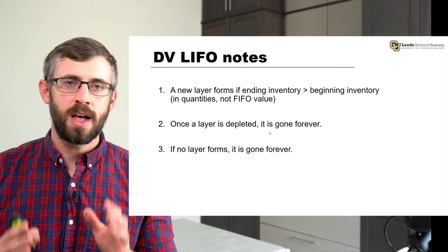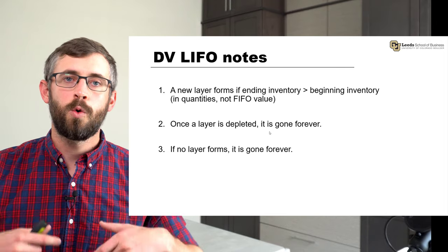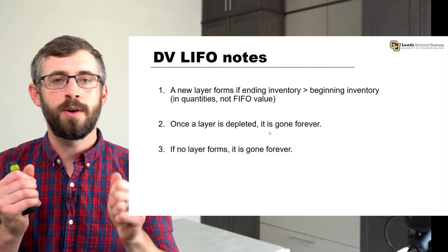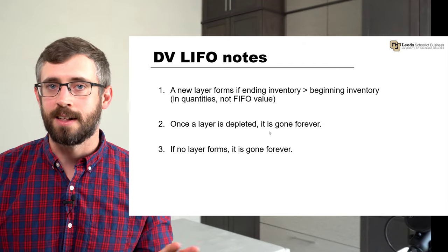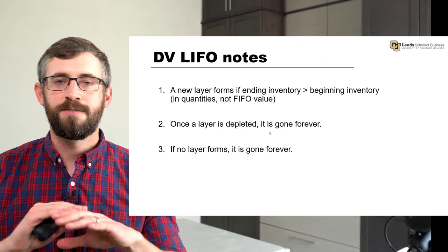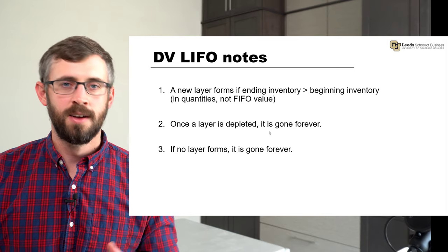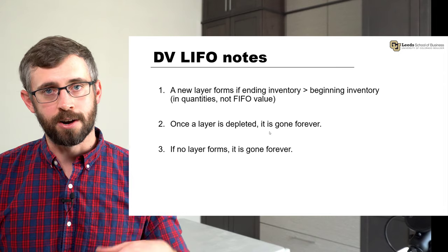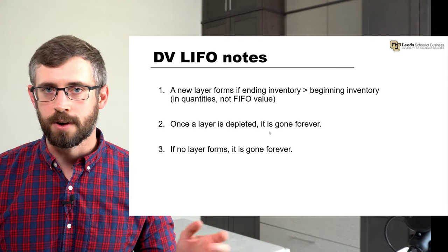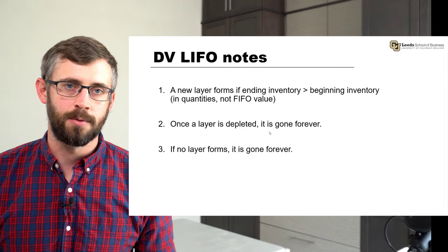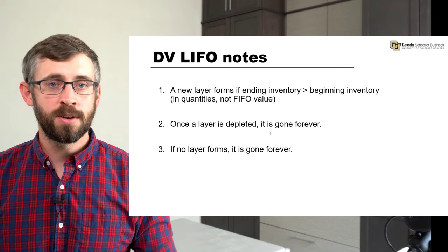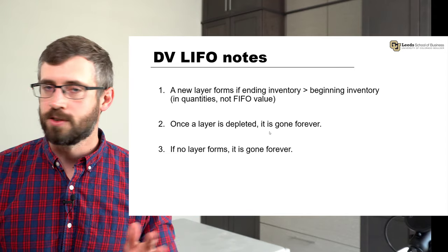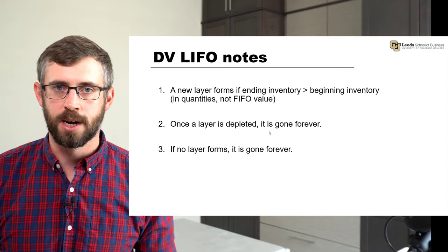We get a new LIFO layer if our inventory quantities increase compared to the prior year. The FIFO inventory value increasing does not tell us anything — we have to fix the price and calculate the number of units to see how inventory has changed. If we deplete a layer or liquidate a layer, it's gone forever, like those 10 orange units we liquidated. And if we fail to build a layer, like that green layer during the liquidation year, it's gone forever as well — those prior year prices never come back.